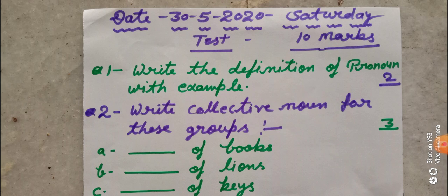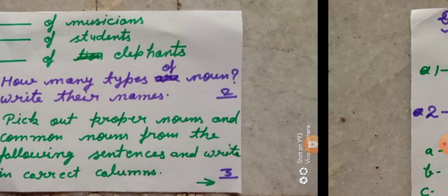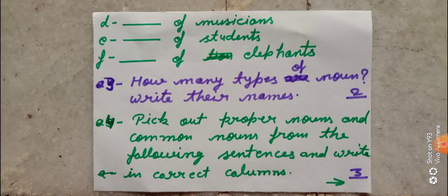Question number two: Write collective nouns for these groups. Aapko kuch groups diye huye hain neeche, aur in groups ke liye aapko collective nouns likhne hain. A — dash of books. B — dash of lions. C — dash of keys. D — dash of musicians. E — dash of students. F — dash of elephants.